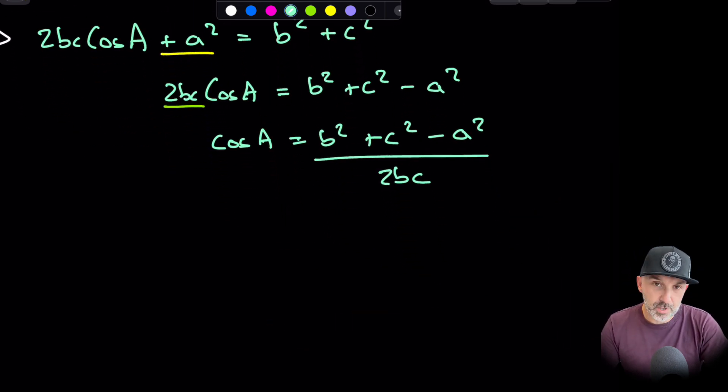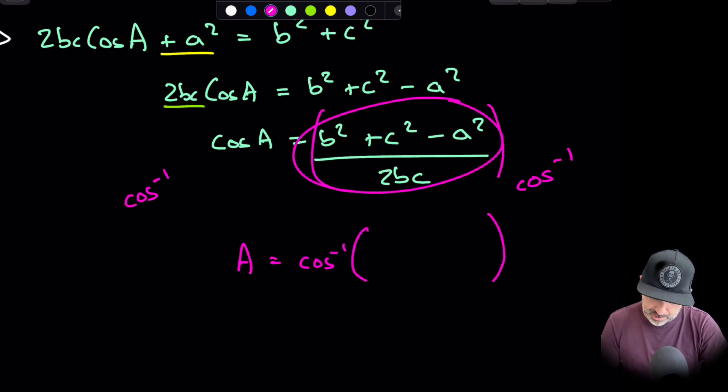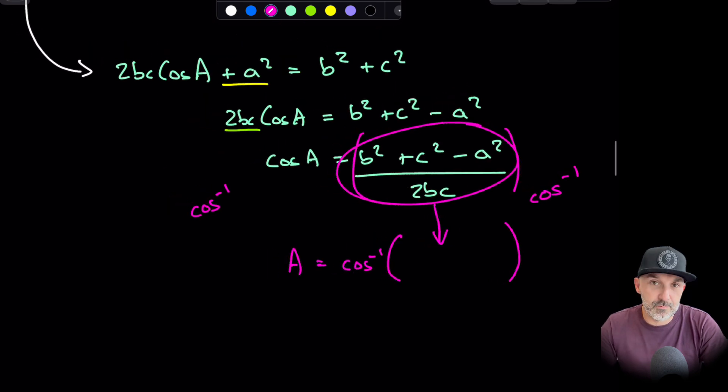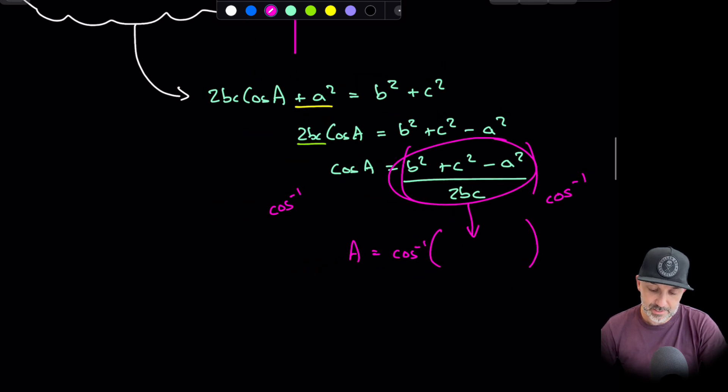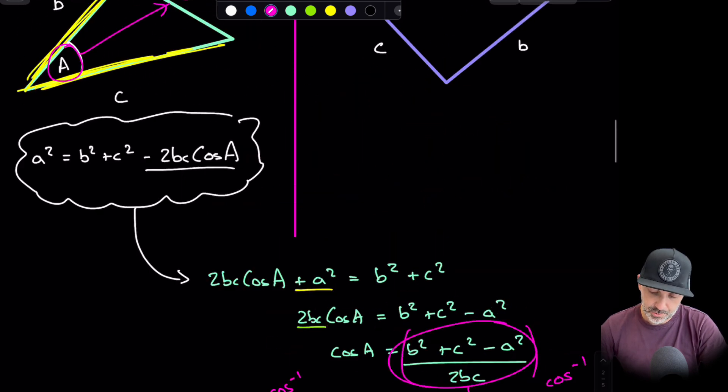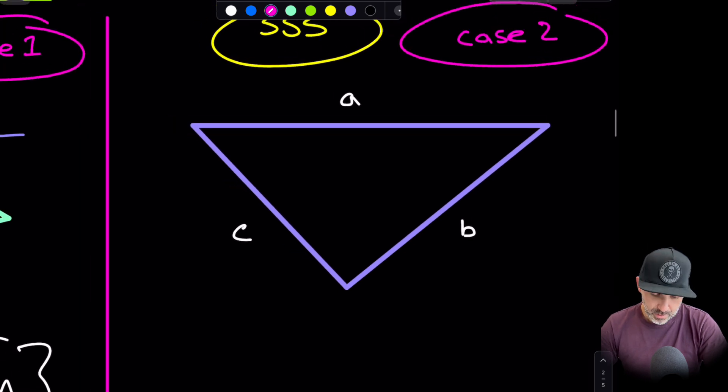And that is the result for cosine A. But we don't really want cosine A, we want to find an angle in one of these use cases. Therefore, we will inverse cosine on the left and also inverse cosine of the entire thing on the right. That would leave us with A = inverse cosine of everything in this bracket here. You can just go ahead and remember that as well or you can just derive it. In some cases, you will be using that out of a formula booklet.